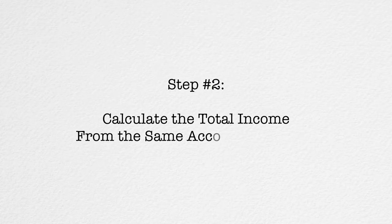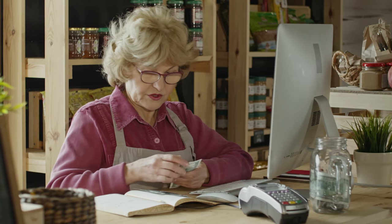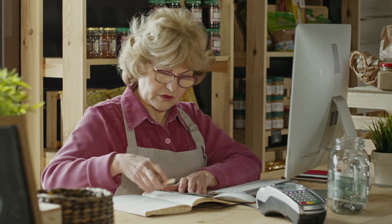Step number two: calculate the total income from the same accounting period. You need to see exactly how much revenue you have generated within the same cycle. If you already have a modern point of sale system, this information should already be calculated for you. If not, simply check your books and add up all the sales you closed within the period in question.